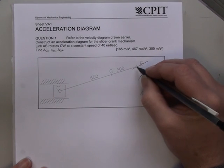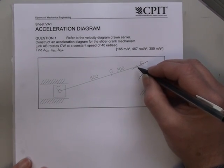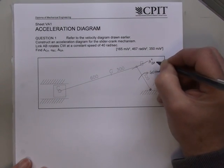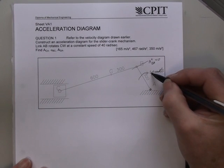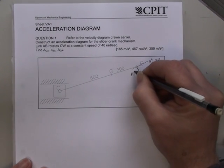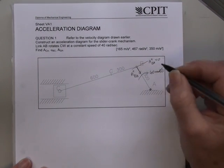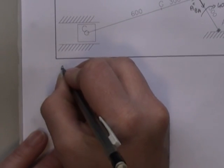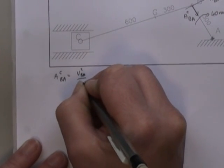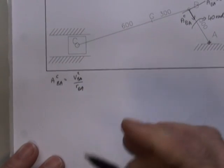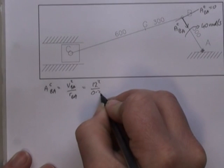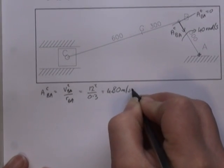I'm trying to find point B, so I need to draw my accelerations at point B. A tangential of BA is equal to zero because this thing is not accelerating, it's going at a constant rotational speed. It will, however, have a centripetal acceleration. A_C of BA is equal to V squared BA over radius BA. From our velocity diagram we get the velocity information, which is 12 squared over 0.3, 480 metres per second squared.